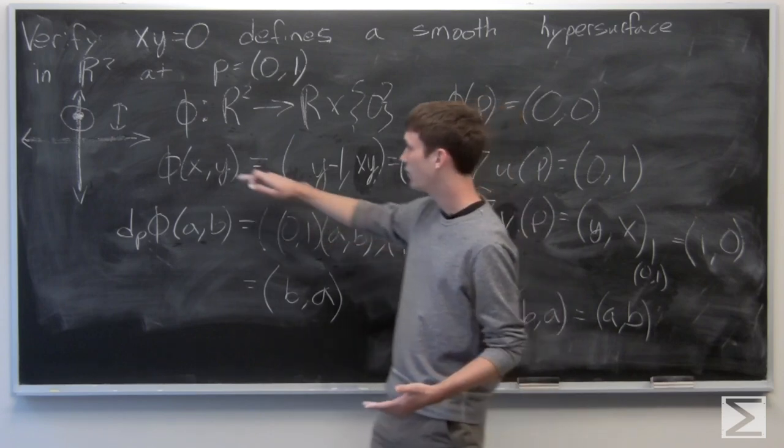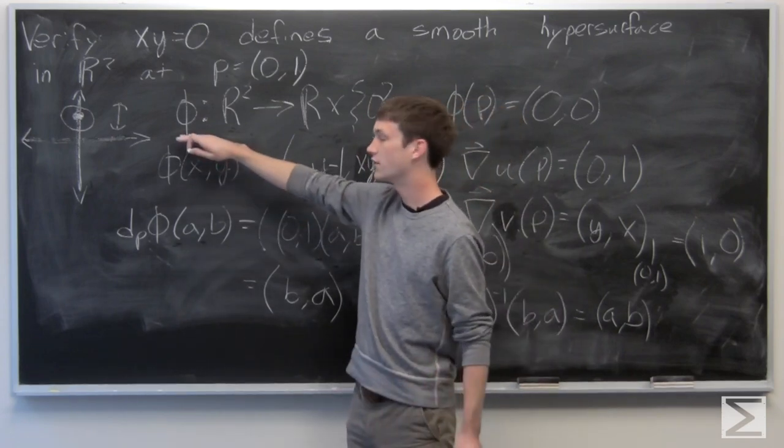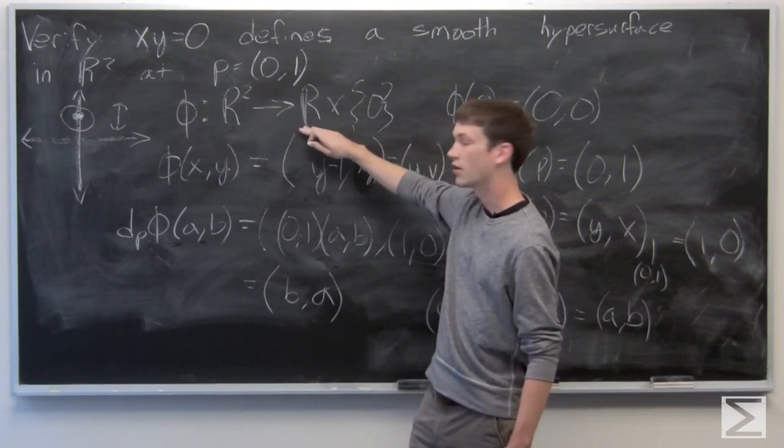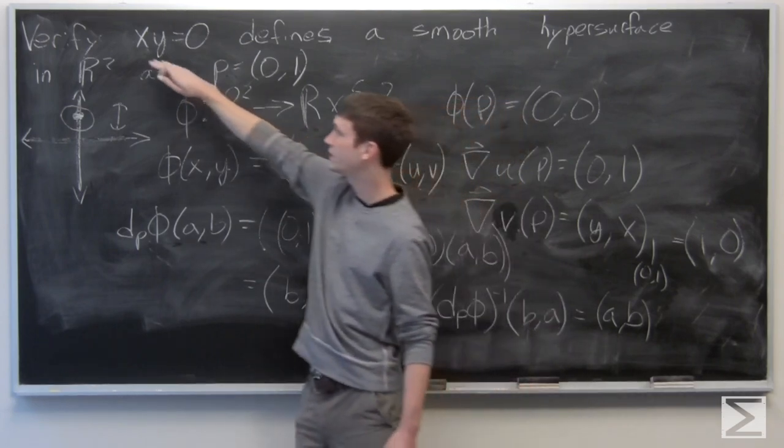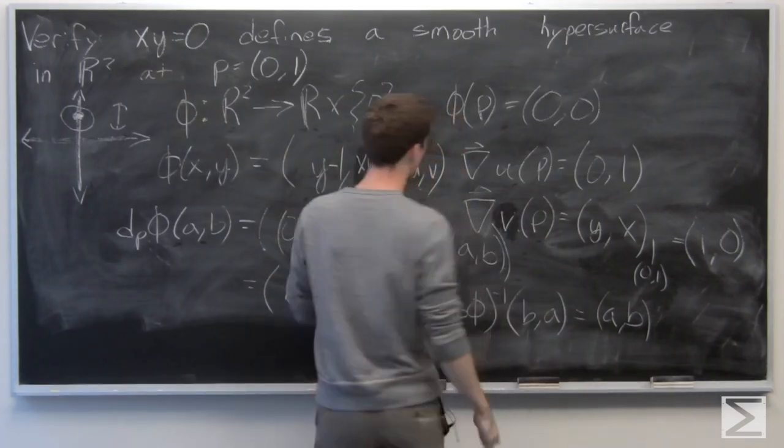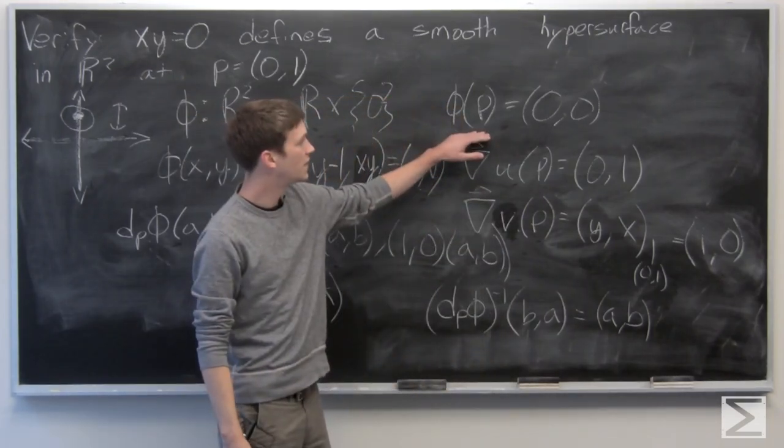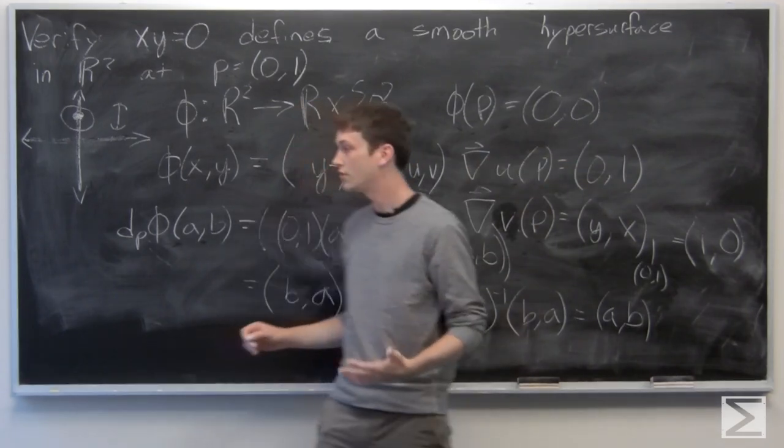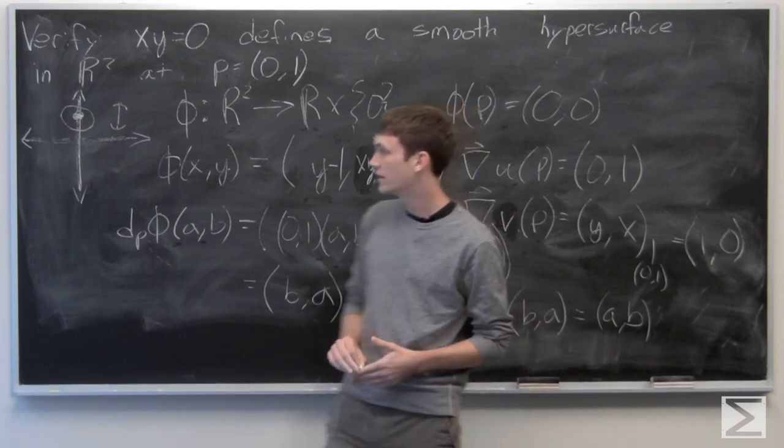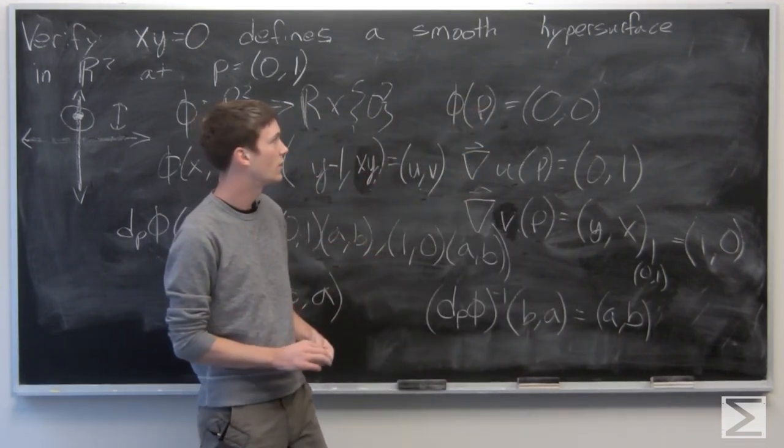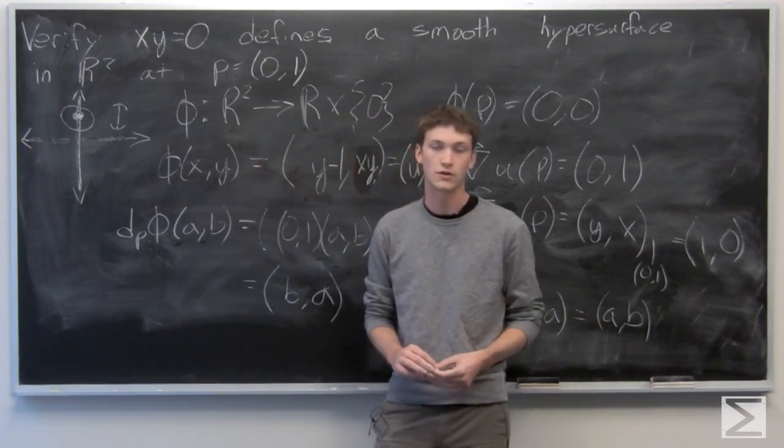So we've shown that we've produced a function phi that takes R2 to R cross 0 for all points xy equals 0. And phi of p is equal to 0 and is a smooth change of coordinates. So that verifies that our function xy equals 0 is a smooth hypersurface in R2.